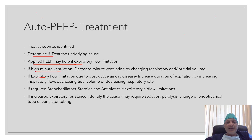If expiratory airflow limitation is due to obstructive airway disease, then expiration can be prolonged by increasing the inspiratory flow rate, decreasing the tidal volume, or decreasing the respiratory rate. If the patient needs bronchodilators, steroids, and antibiotics due to expiratory airflow limitations, then these should be used appropriately. If the cause of auto PEEP is increased expiratory resistance, identify the cause — it may require sedation, paralysis, change of the endotracheal tube or ventilatory tubing, or suctioning, depending on the exact etiology.